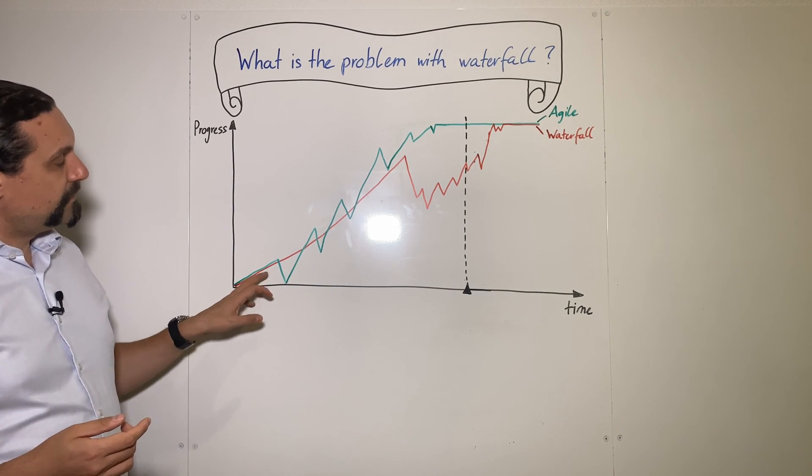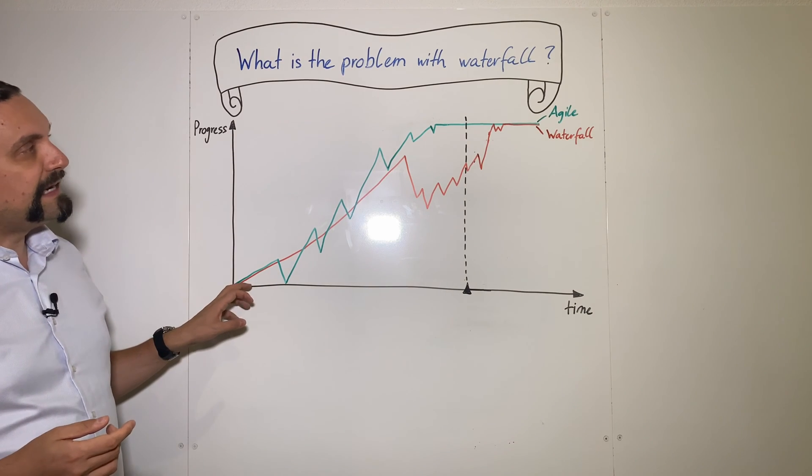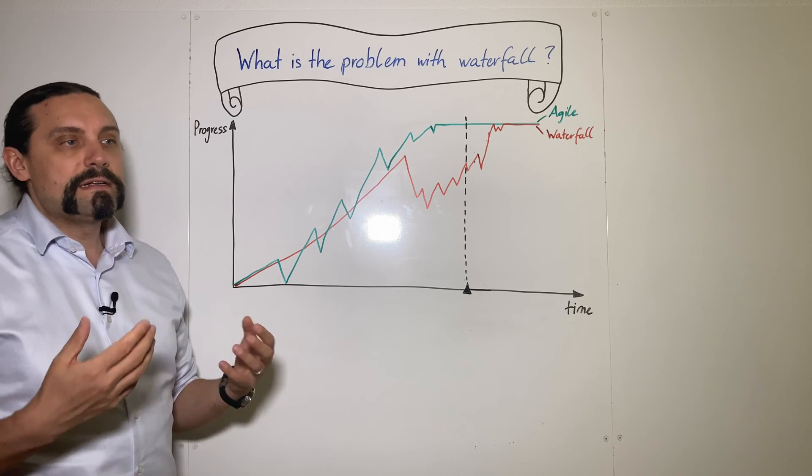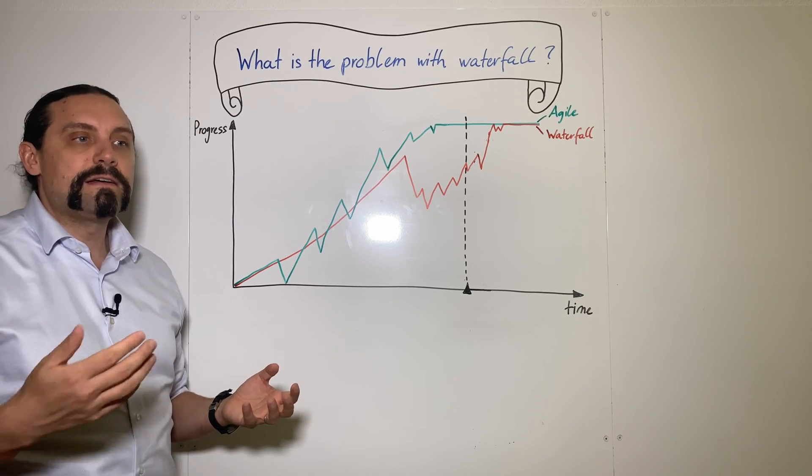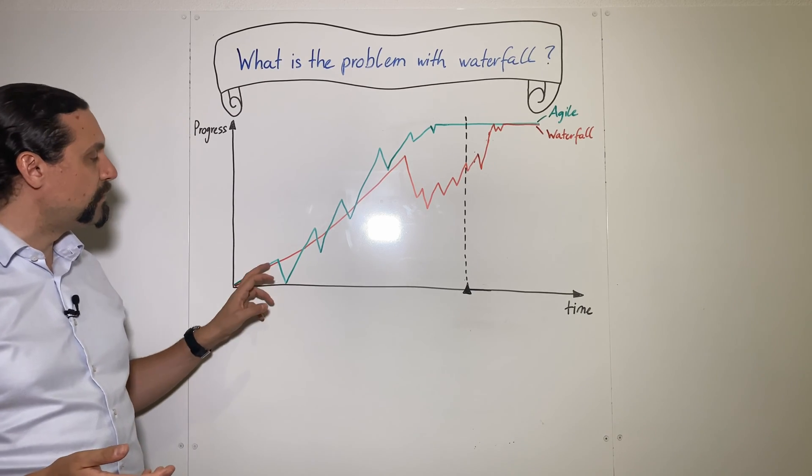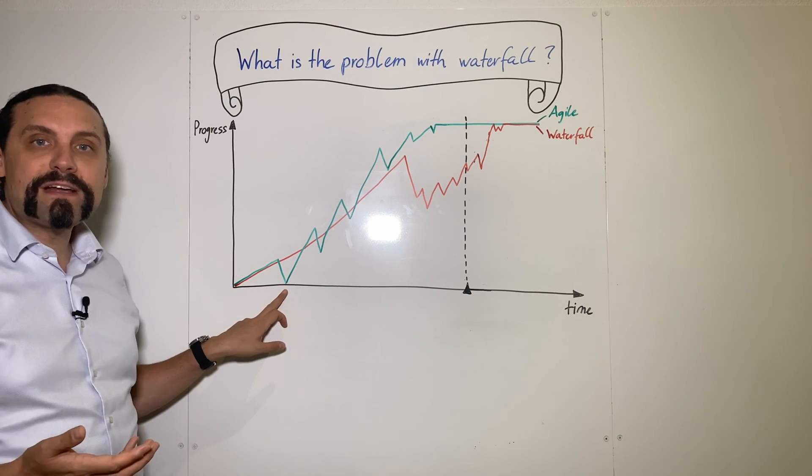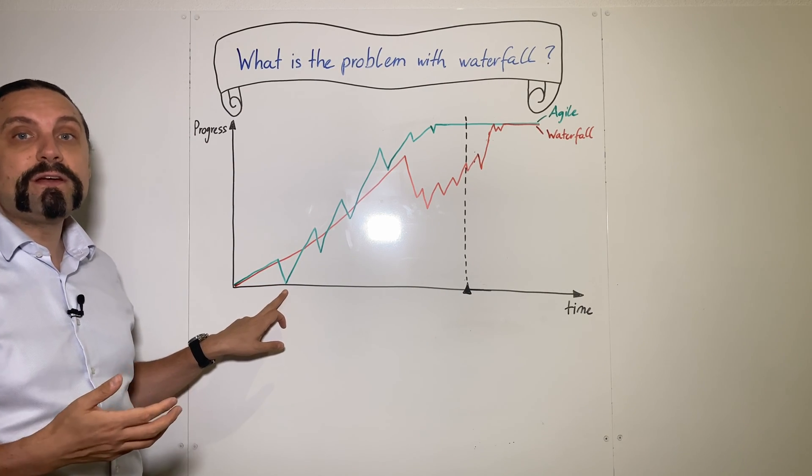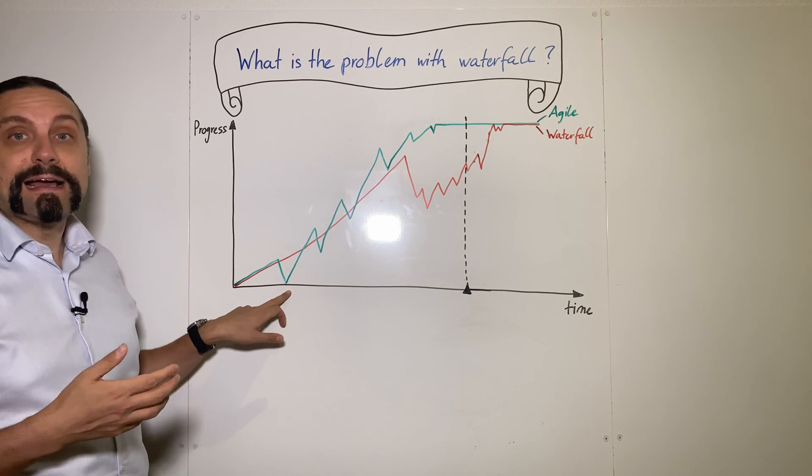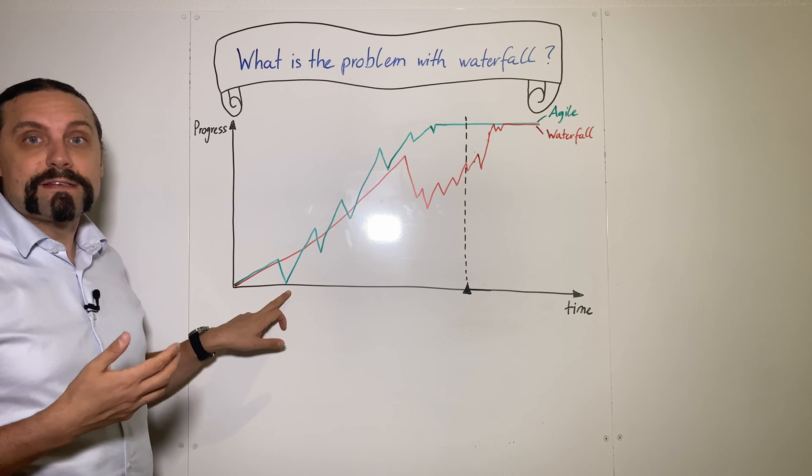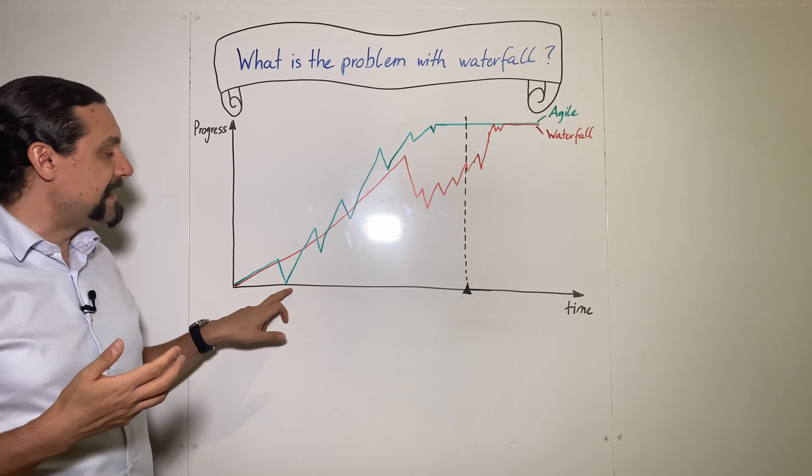In the green line you can see the agile way. In the agile way we are going to analyze, design, code and test in one step, and you can see that we have now the integration step very very early and we fail. And it is that fail fast which makes us so good in that way.